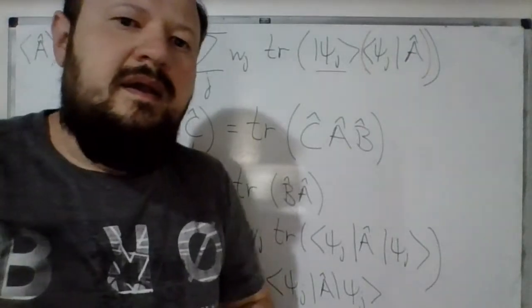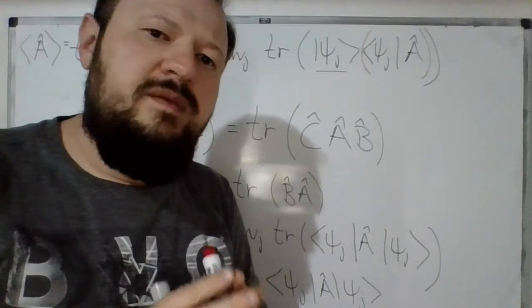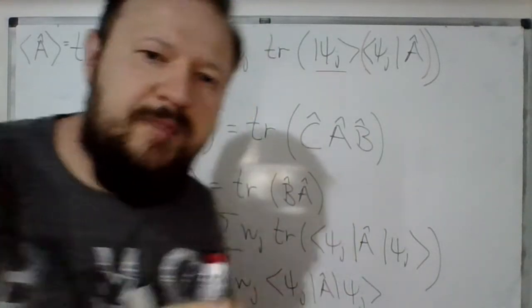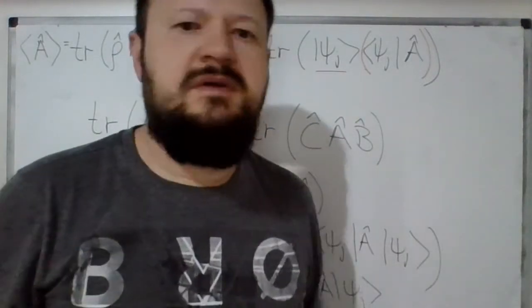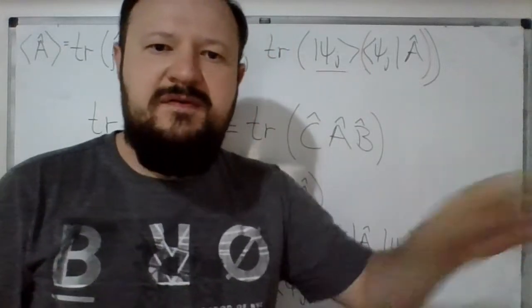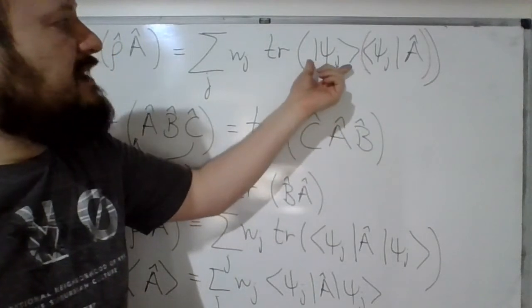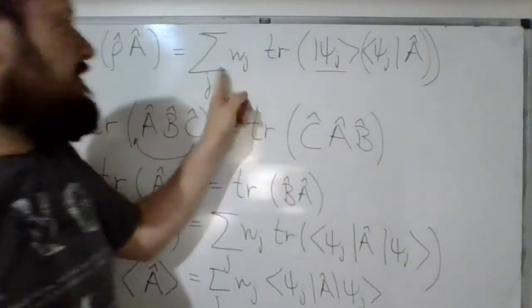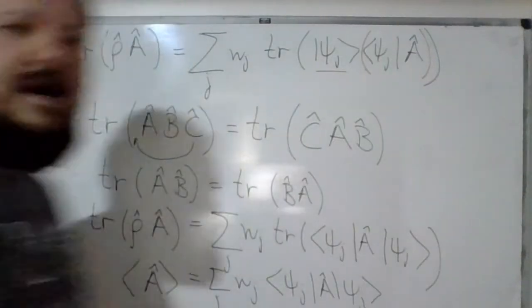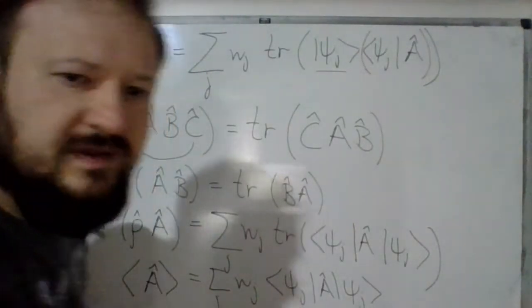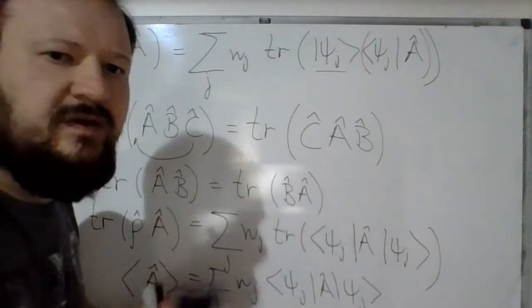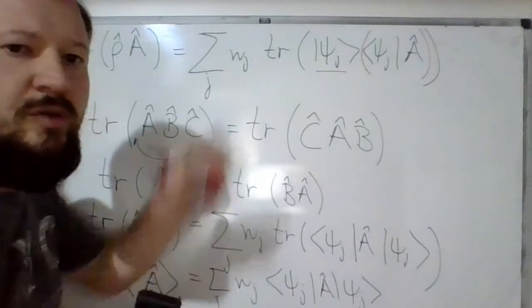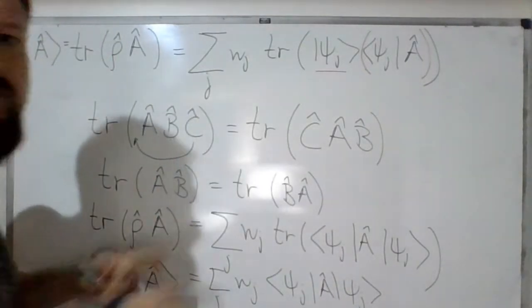Therefore, if you calculate the trace of the density matrix operator times A, you have the average of operator A given a collection of states. You don't need a pure ensemble or copies in the same state. You can have a collection of subsystems each in state psi_j with statistical probability wj. The density matrix is used when you don't have a definite quantum mechanical pure state — you have an ensemble of mixed states.